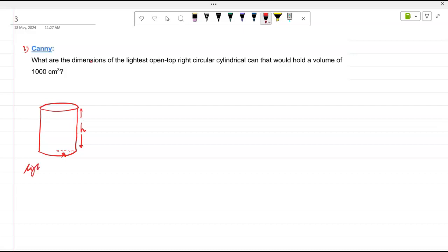Now lightest means what? Lightest means the surface area should be minimum. You have to use as little tin as possible. Minimum surface area basically.